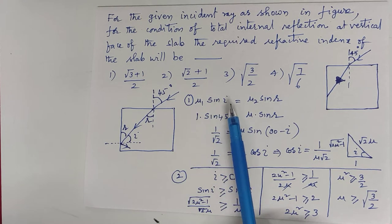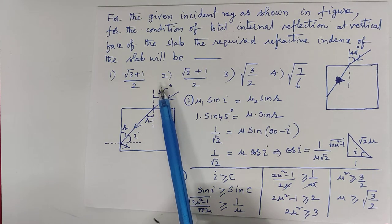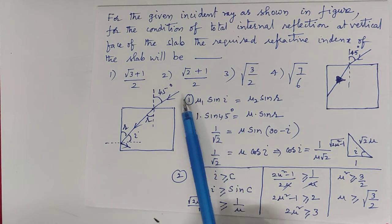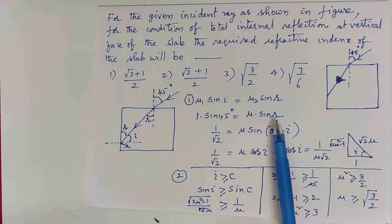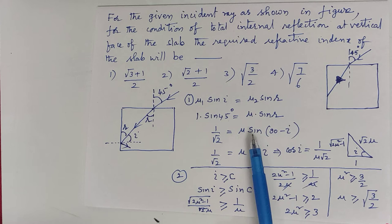We know μ₁ sin i equals μ₂ sin r. Light is incident from first medium with refractive index 1 for air or vacuum. sin i, i is 45. sin 45 equals μ sin r. sin 45 is 1/√2, that equals μ sin r.